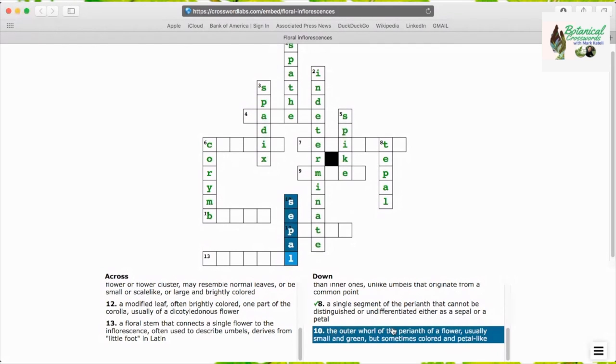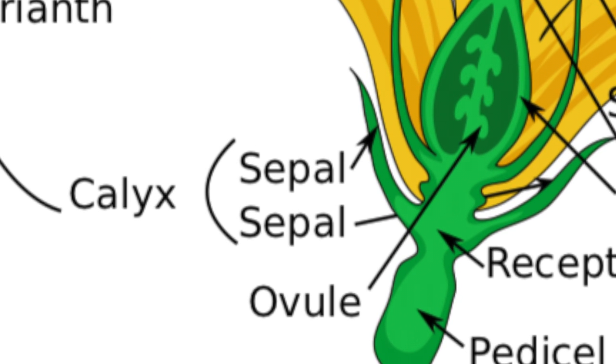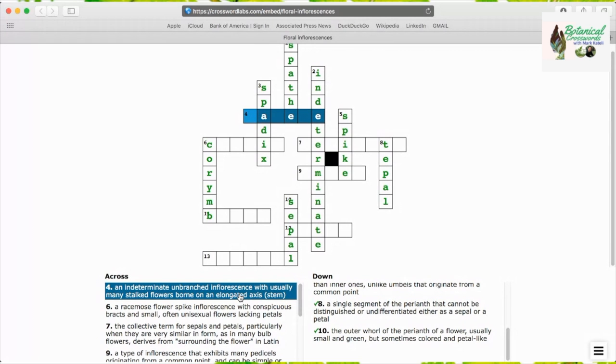Sepal, the outer whorl of the perianth of a flower, usually small and green but sometimes colored and petal-like. Sepals are part of the flower structure; bracts are not.